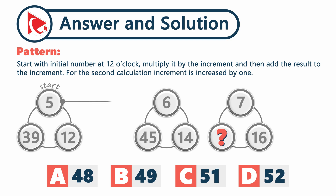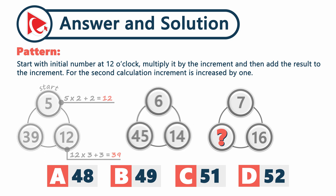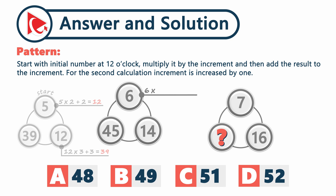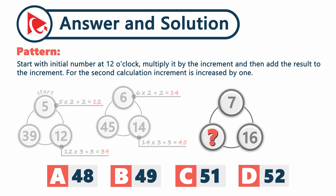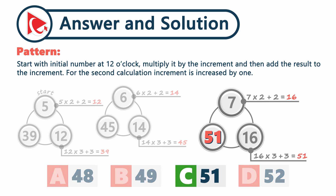Let's look at the example. To get from 5 to 12, you need to multiply 5 and 2, and then add 2. The result is 12. Now the next increment is 3: 12 multiplied by 3 plus 3 equals 39. Let's look at the second shape to confirm the pattern: 6 multiplied by 2 plus 2 equals 14, and 14 multiplied by 3 plus 3 equals 45. Now it's the magic time to calculate the missing number: 7 multiplied by 2 plus 2 equals 16, and 16 multiplied by 3 plus 3 equals 51. So the correct answer here is choice C: 51.